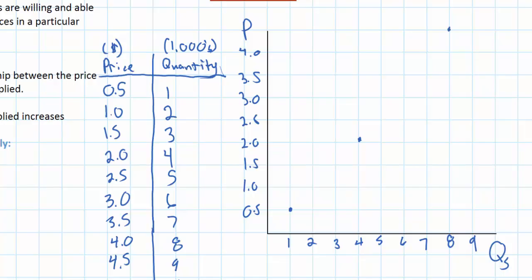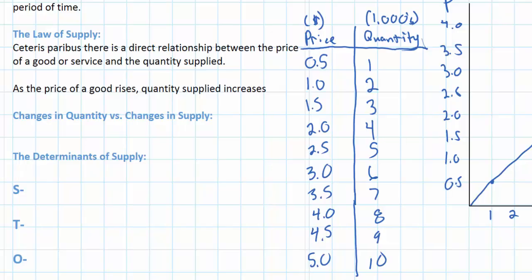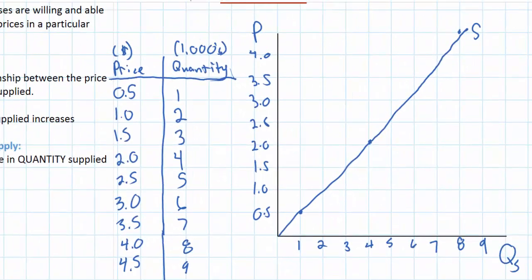These three points give us what we call our supply curve, which in this case is a linear supply curve showing the direct relationship between the price of energy drinks and the quantity that businesses are willing and able to supply. We now want to distinguish between changes in quantity supplied versus changes in supply. A common misconception is the statement that an increase in the price of energy drinks leads to an increase in the supply of energy drinks — this is incorrect use of economic terminology. In fact, an increase in price leads to an increase in quantity supplied, which graphically is shown as a movement along the supply curve.